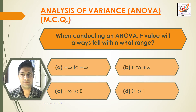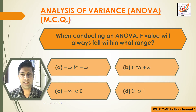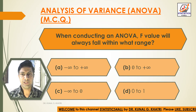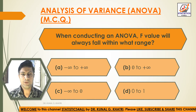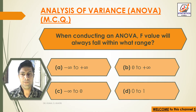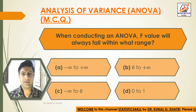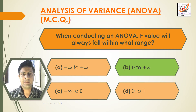Next question: When conducting an ANOVA, the F value will always fall within what range? Option A: Minus infinity to plus infinity. Option B: 0 to plus infinity. Option C: Minus infinity to 0. Option D: 0 to 1. Answer: Option B, 0 to plus infinity. When conducting an ANOVA, the F value will always fall within the 0 to plus infinity range.